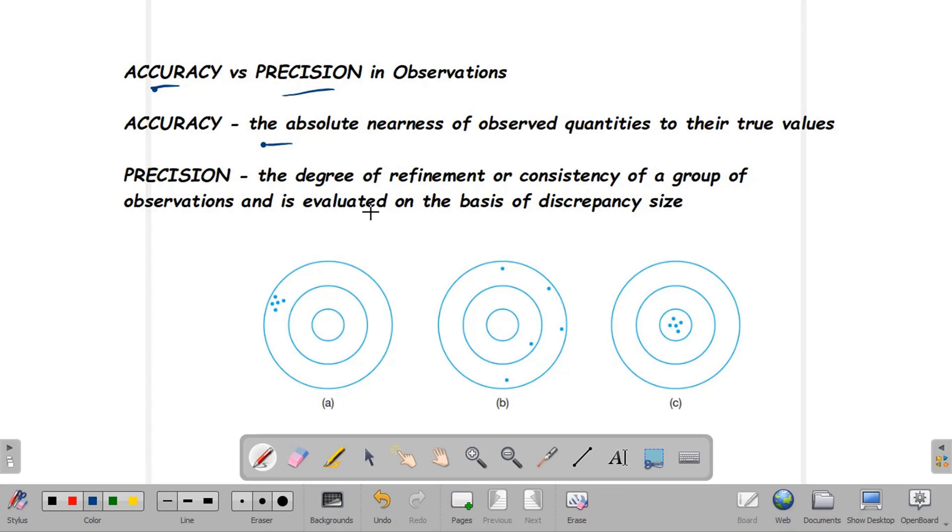Precision is the degree of refinement or consistency of a group of observations and is evaluated on the basis of discrepancy size.